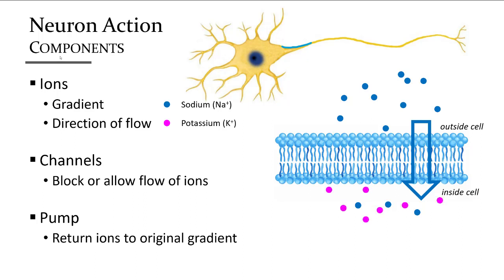Potassium has a high concentration inside the neuron and a low concentration outside, so the gradient direction for potassium would be to leave the neuron. This distribution, gradient of flow, and the effect of moving a positive charge into or out of the cell is very important to understand how a neuron functions. Channels open and close to block or allow an ion's movement, and pumps put ions back after they go through channels to reset the balance.